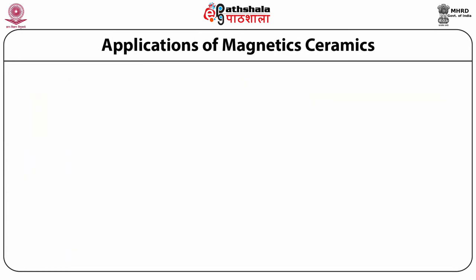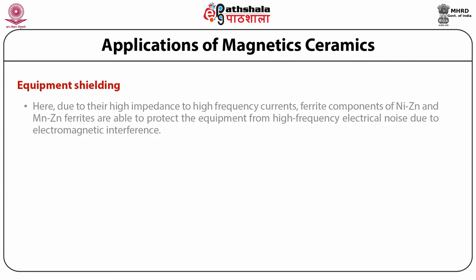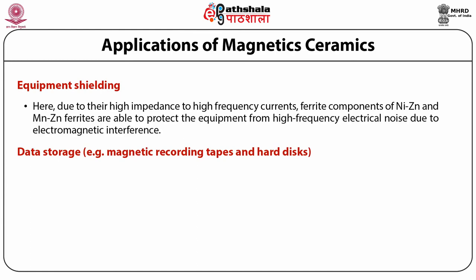The next application is equipment shielding. Due to their high impedance to high-frequency currents, ferrite components of nickel-zinc and manganese-zinc ferrites are able to protect equipment from high-frequency electrical noise due to electromagnetic interference. The next application is data storage — for example, magnetic recording tapes and hard disks.